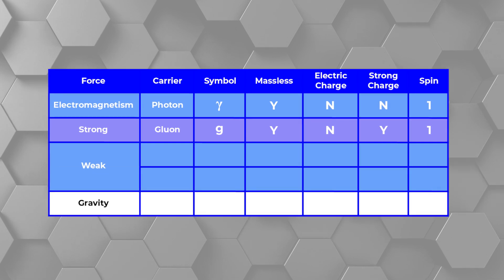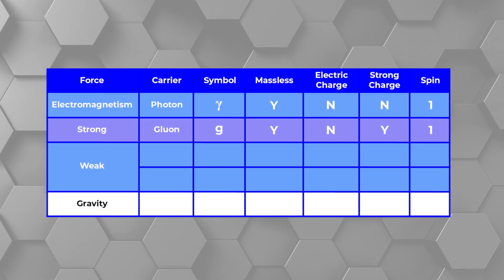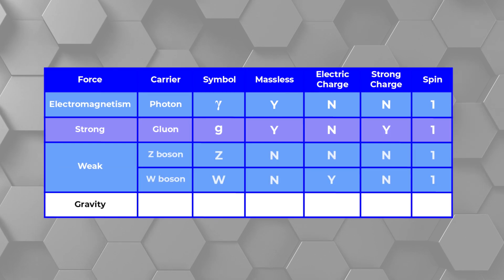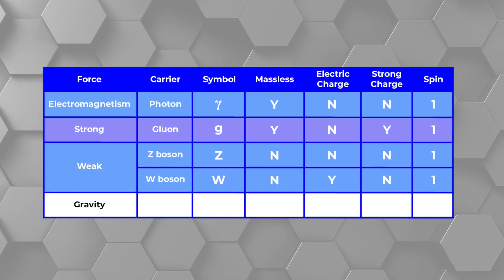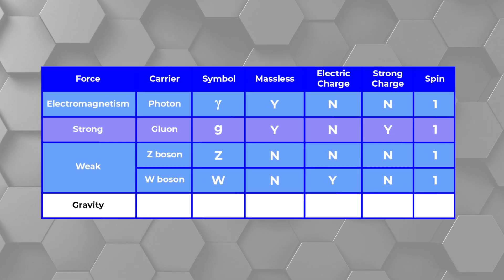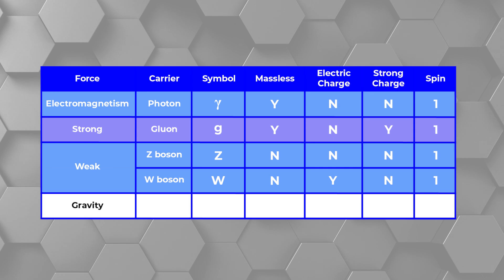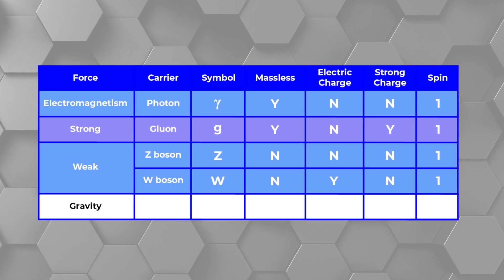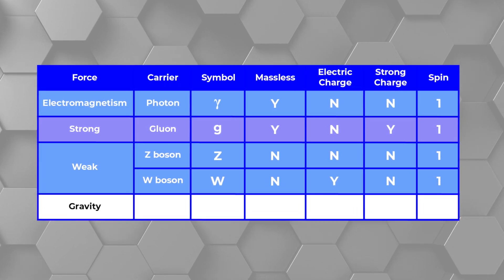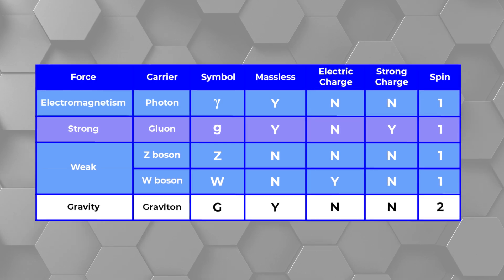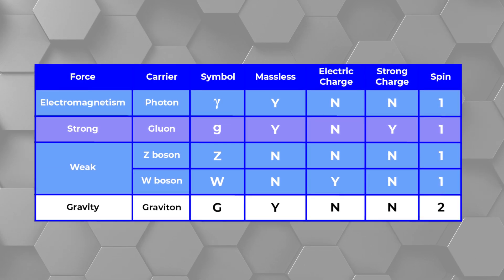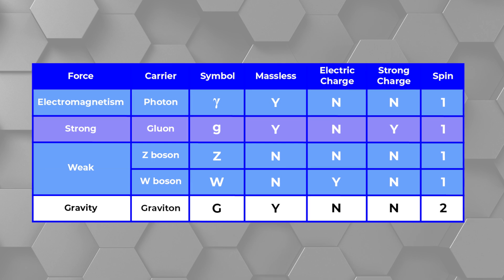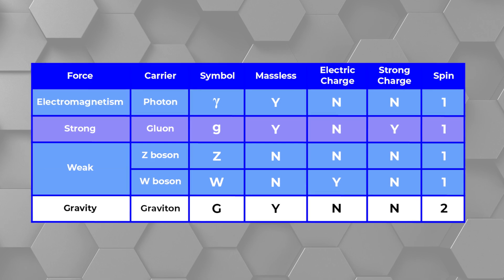The gluon does have a strong force charge. For the weak force, there are two particles of force, the W and Z bosons. They have mass and one of them has electrical charge. Both have a spin of one. In gravity, the force-carrying particle must be the graviton. It has no strong or electrical charge.